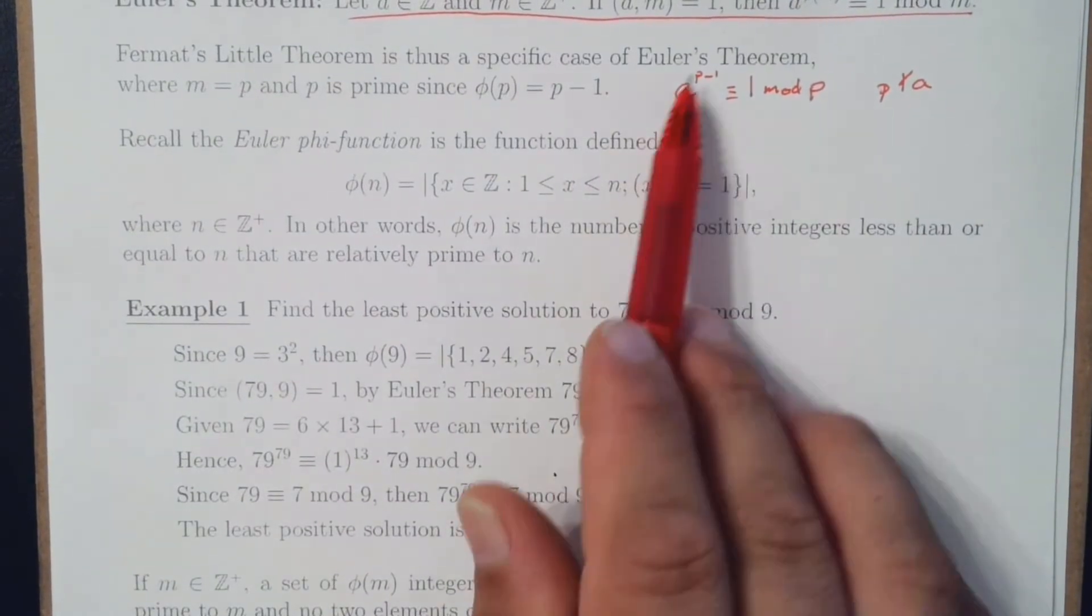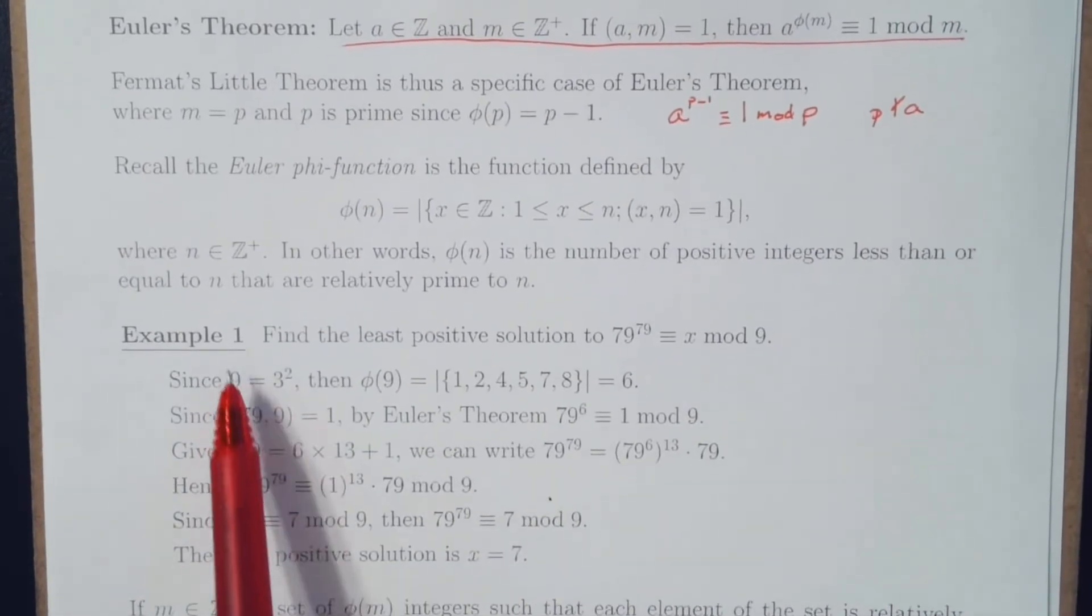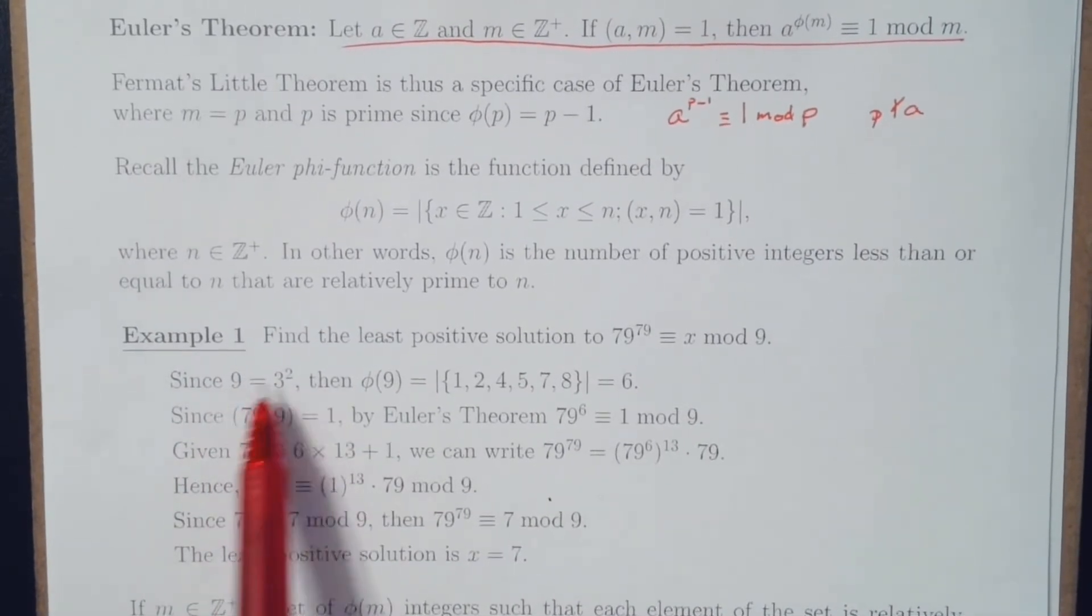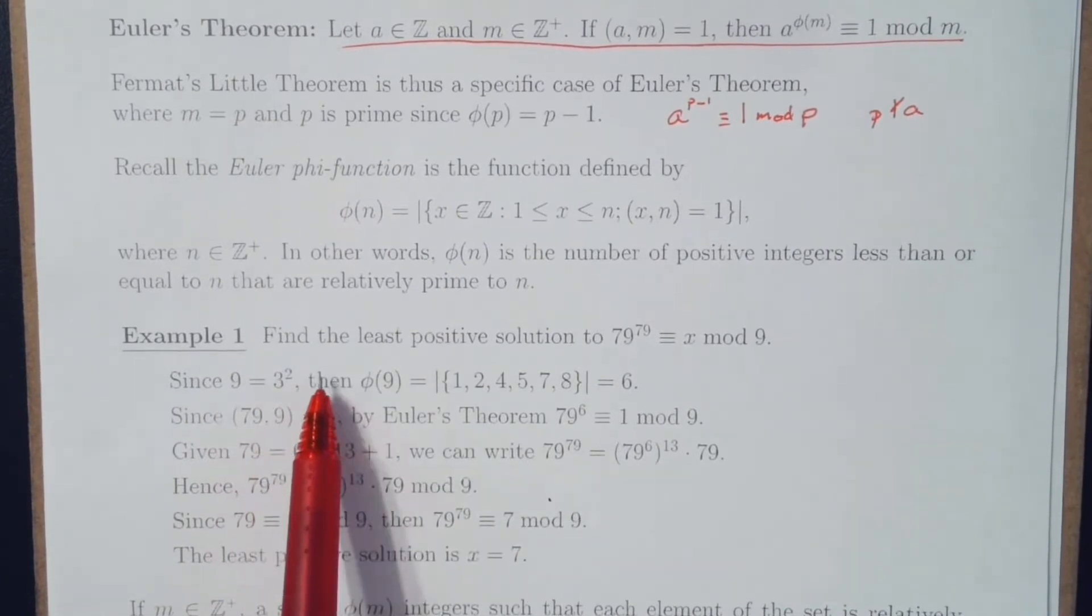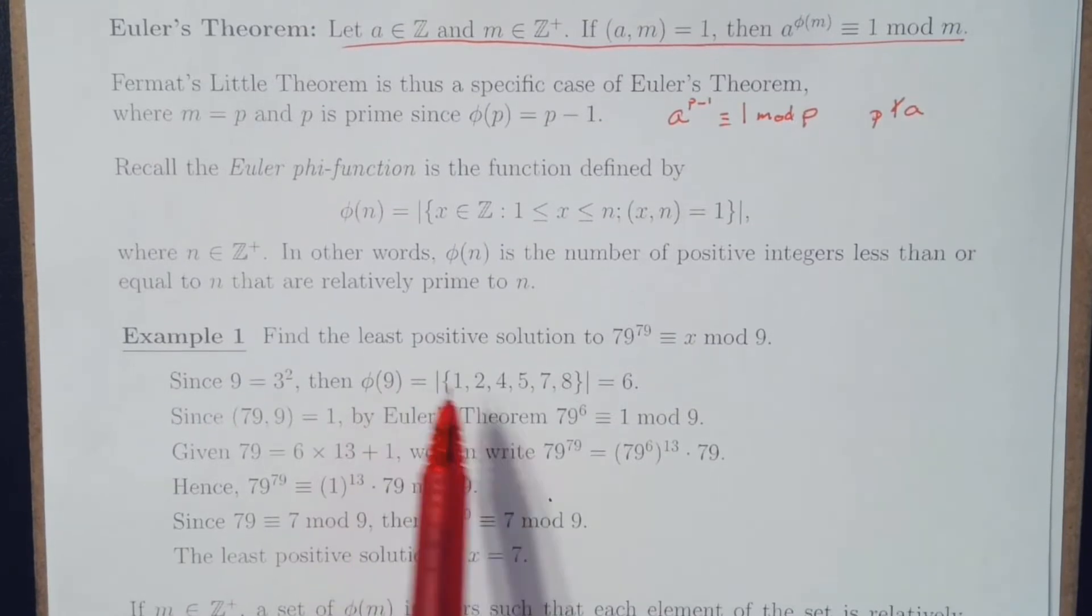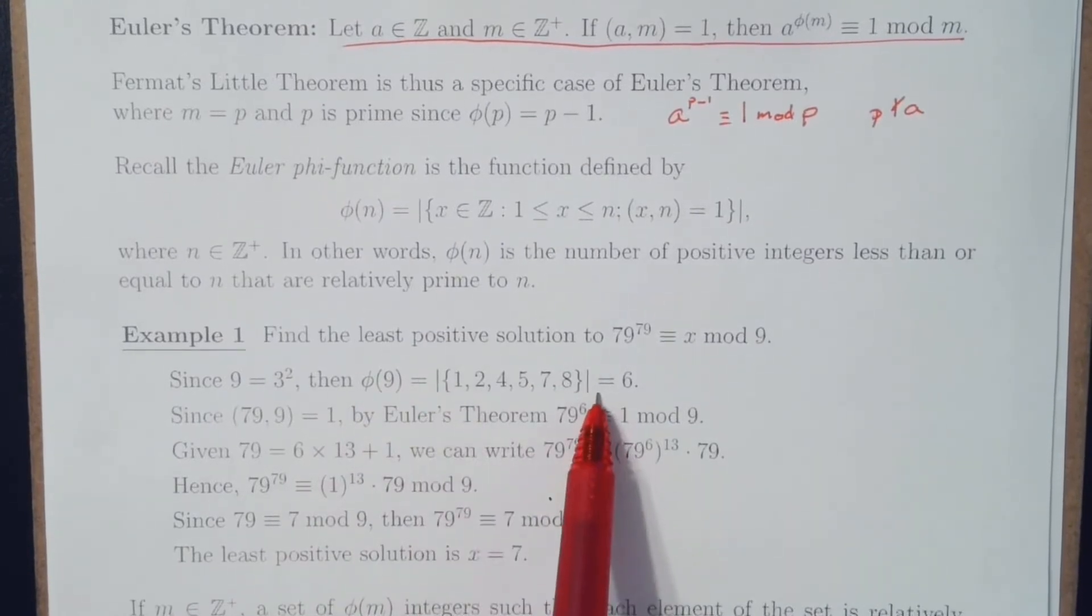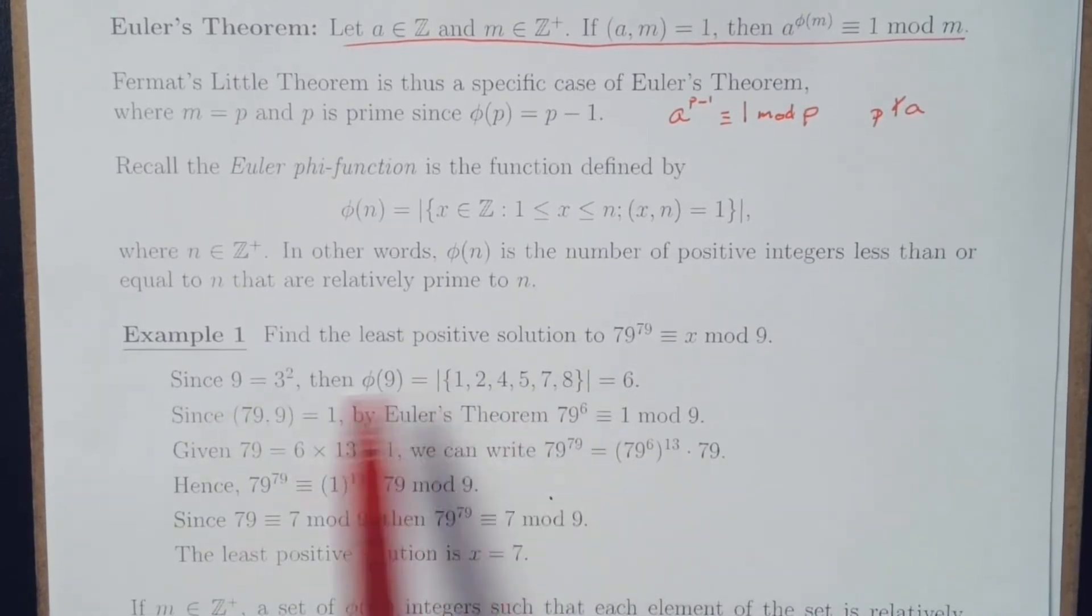Given that we're talking about Euler's Theorem, let's look at how we could write this. 9 is 3 squared, so that means that the Euler phi function of 9 is going to be the magnitude of those numbers relatively prime to 9 that are less than or equal to 9.